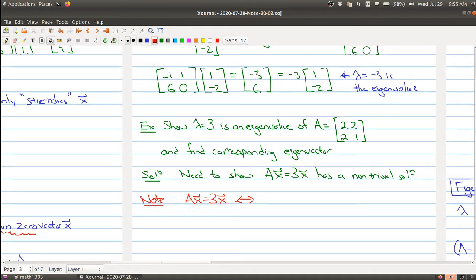We want Ax to be equal to 3 times x. Now at first glance it looks a little weird right because on this side I have a matrix times a vector and on this side I have a scalar times a vector.